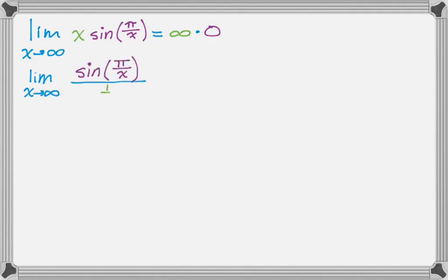So I have sine of π/x, and then it's over 1 over x. So now when I take the limit I actually end up with 0 in the numerator and 0 in the denominator because the infinity that was in the numerator is now 1 over infinity or 0 in the denominator. I'm going to use L'Hopital's rule because I have the indeterminate form I want.